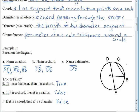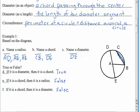So for example, over here, this CB is a chord, but it is not a diameter, because it doesn't go through the center of the circle. Let's check out the next page.